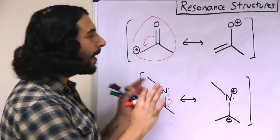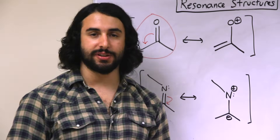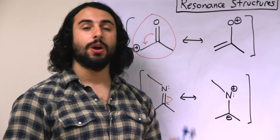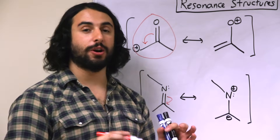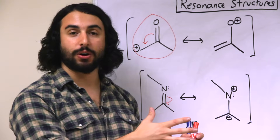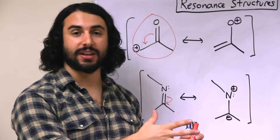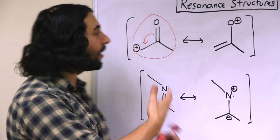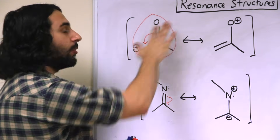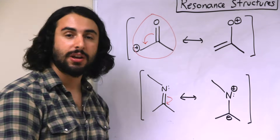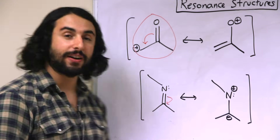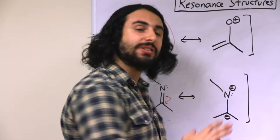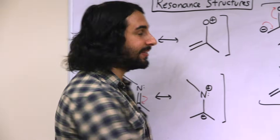They are both valid resonance structures. However, the composite resonance structure would show a skewing of the partial pi electron density — actually more towards the oxygen — because the carbon can better accommodate the positive charge. Now let's look at precisely the opposite scenario.